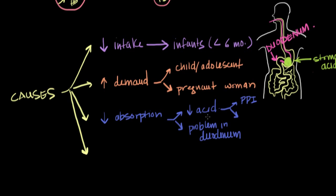A second type of patient with decreased stomach acid production is one who has had a gastrectomy — either a partial or entire removal of the stomach. This might be done for weight loss or to remove a stomach cancer or ulcer. Regardless of the reason, with removal of part of the stomach, you have decreased stomach acid production, which reduces conversion of iron into the form more easily absorbed by the duodenum, leading to iron deficiency anemia.